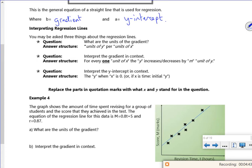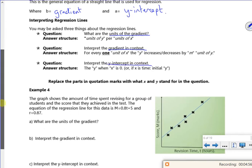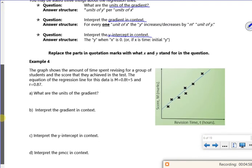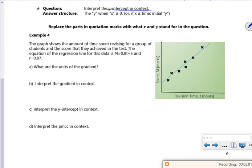So you can be asked three things about a regression line. The units of gradient - I'm sure we've talked about this before. The gradient in context, and what the y-intercept means. So the graph shows the amount of time spent revising for a group of students and the score they achieved. Well, they've got to put that in, haven't they, really, to show that if you spend more time working, you're going to get a better score.